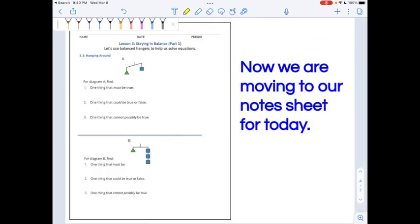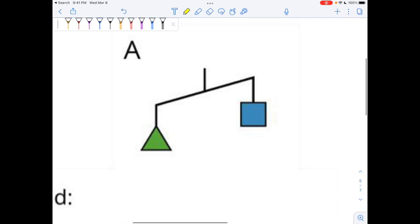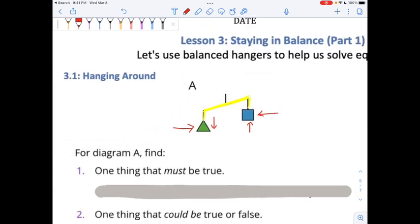Okay. Make sure that you have your notes sheet for today. It's just one-sided. The rest of this video should be kind of short. Let's see how it goes. Lesson three, staying in balance. We're going to use balanced hangers to help us solve equations. So here is our hanger. This reminds me of the last picture with the socks. I can see that this hanger is tilted.